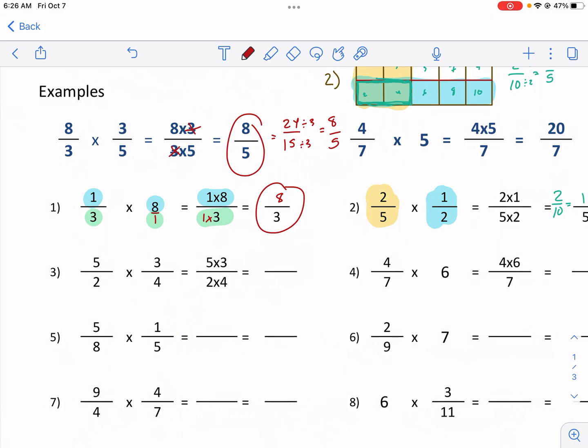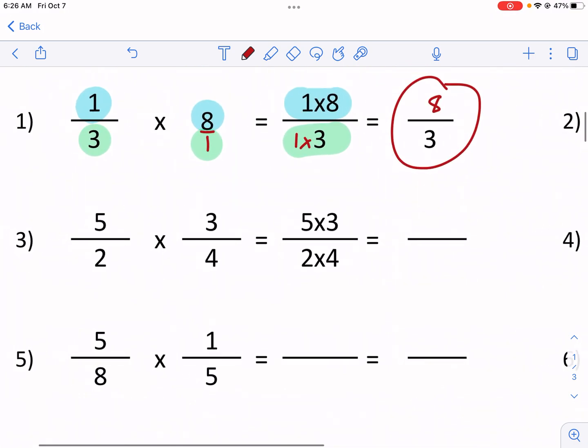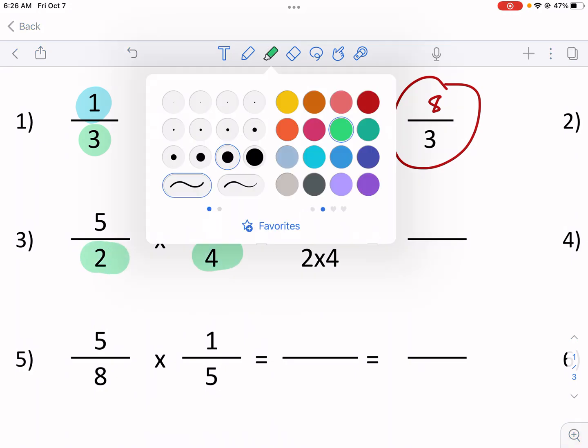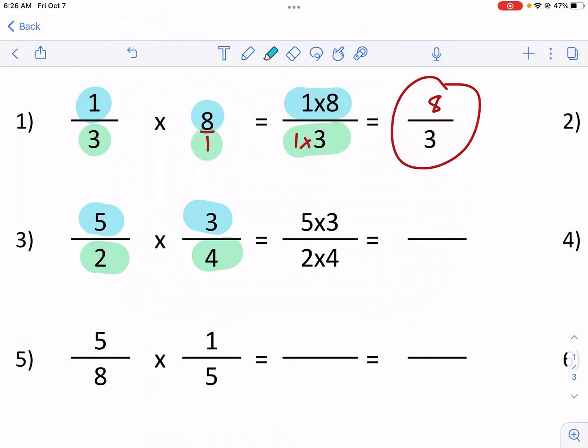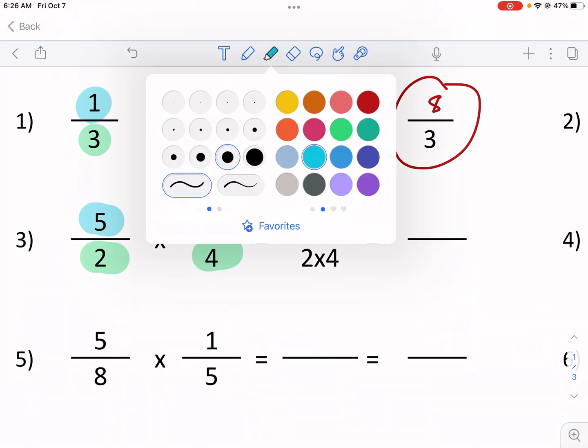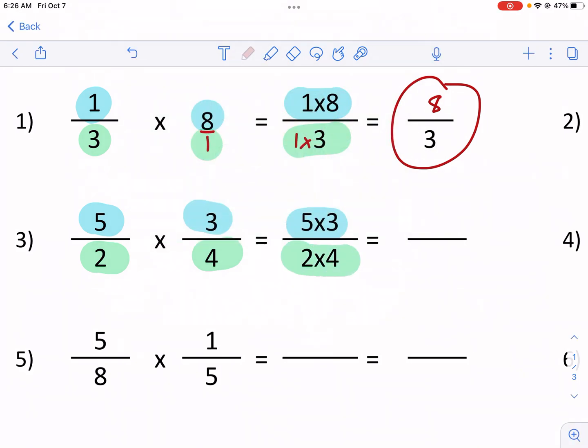So let's try to find some that we can reduce. So here it gets mostly set up for us. We have five times three, top times top, bottom times bottom. And if you want to highlight it just to remember, I would do that. If you have it handy, if you don't, that's okay. But we have 15 over eight.